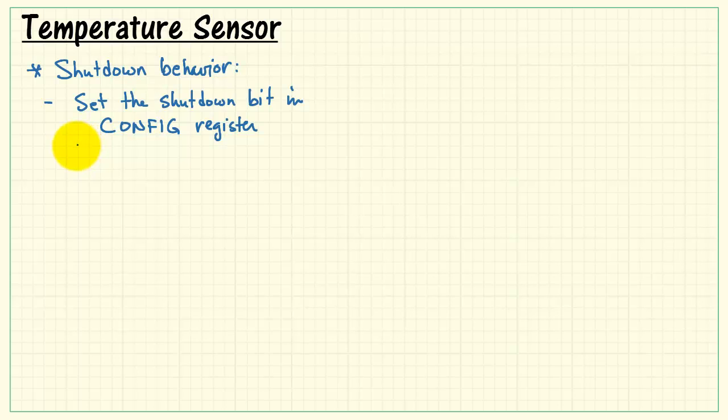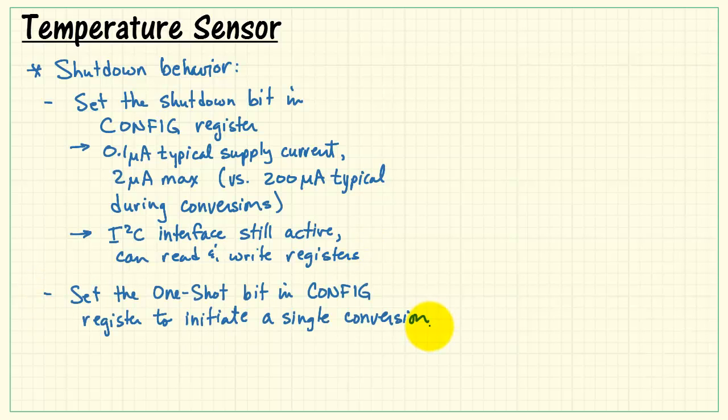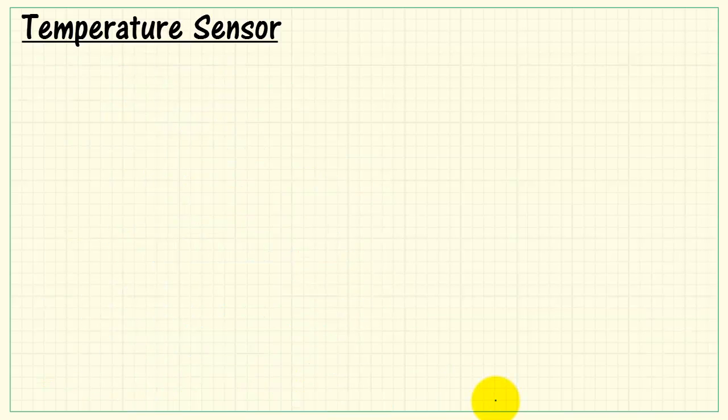Let's look at the shutdown behavior. You can set the shutdown bit in the config register, and that draws 0.1 microamps typical in shutdown mode with a 2 microamp max. And that's compared to about 200 microamps typical during conversions. The I2C interface is still active during shutdown mode, and you can read and write the registers. You can set the one-shot bit in the config register to initiate a single conversion. Wait for the conversion to complete, and then read the measurement in the TA register. The one-shot bit will automatically clear to 0 when you read the updated measurement.